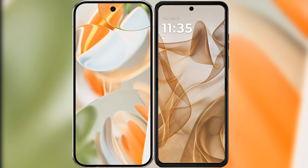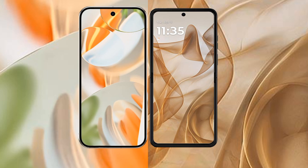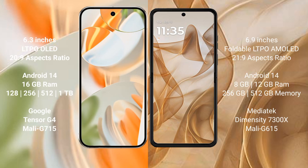I will compare the new Google Pixel 9 Pro with the Motorola Razr 50. The Google Pixel 9 Pro features a 6.3-inch LTPO AMOLED display with a 120Hz refresh rate, while the Motorola Razr 50 comes with a larger 6.9-inch foldable LTPO AMOLED display also with a 120Hz refresh rate.